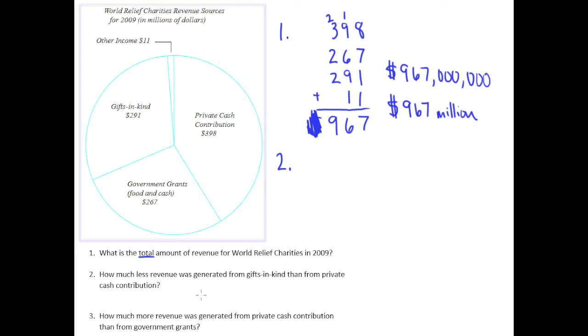Problem number two asks, how much less revenue was generated from Gifts in Kind than from private cash contribution? So this word less should hopefully indicate subtraction for us. How much less revenue was generated from Gifts in Kind than from private cash contribution? So Gifts in Kind is the 291, and we want to know how much less of this do we have than this number right here, private cash contribution. So that means we're going to subtract those two. So 398 minus 291.